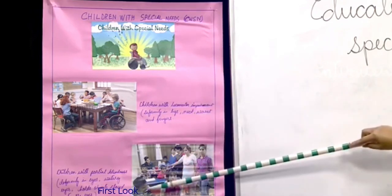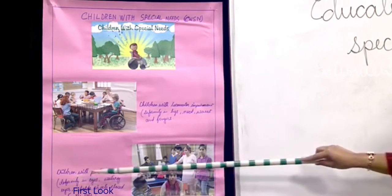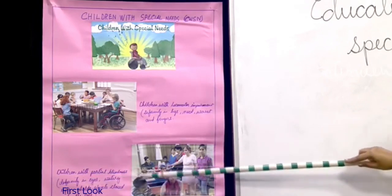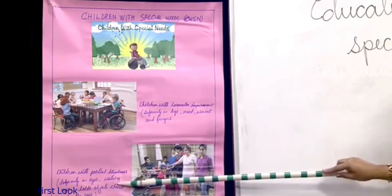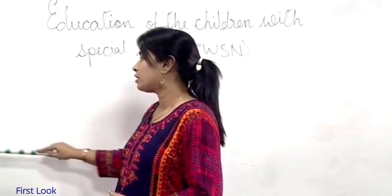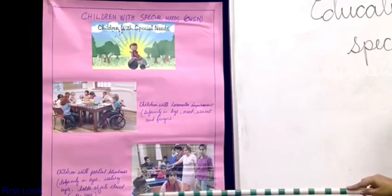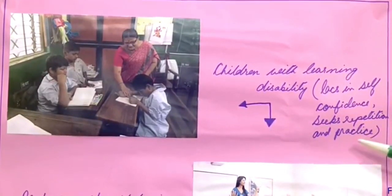In the other picture, just take a look at this picture. Here I have pasted one picture of children with partial blindness. The main features of children with partial blindness is deformity in their eyes, watery eyes, holding objects close to the eyes. These are the basic features of children with partial blindness, identifying which is very important for you while you are dealing with them in the classroom. The third picture that I have pasted here is of children with learning disabilities. The main feature of children with learning disabilities are lack in self-confidence and they seek repetition and practice.